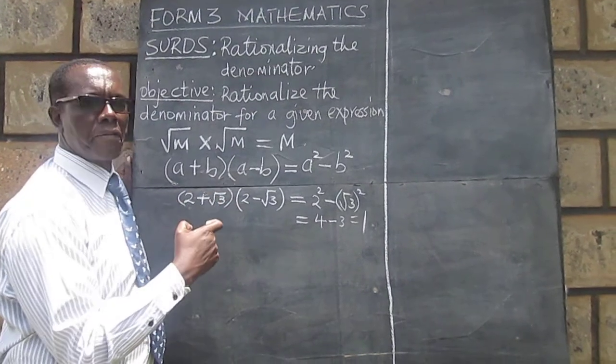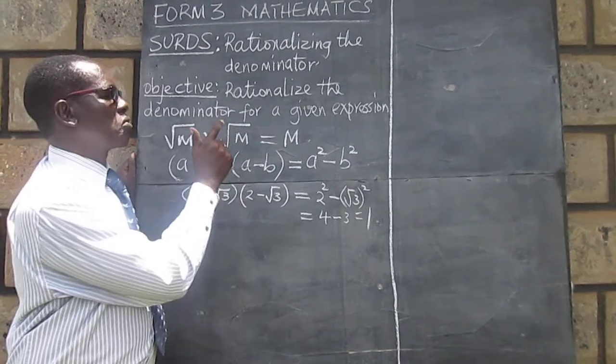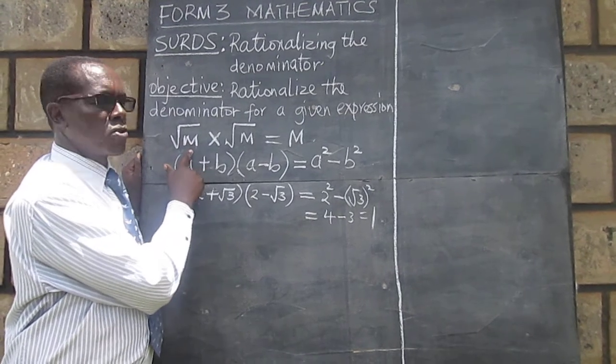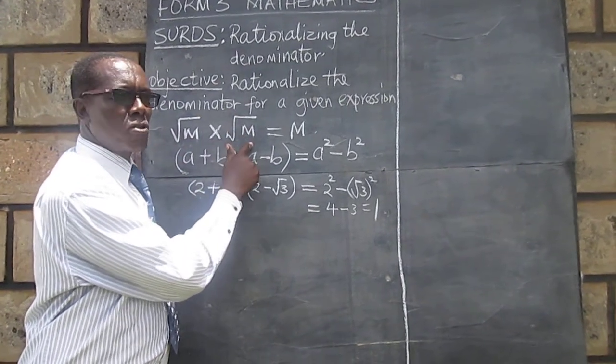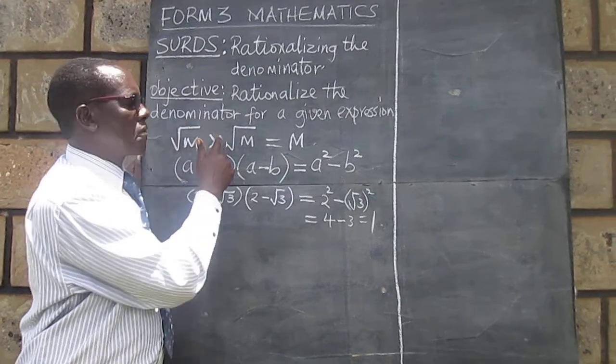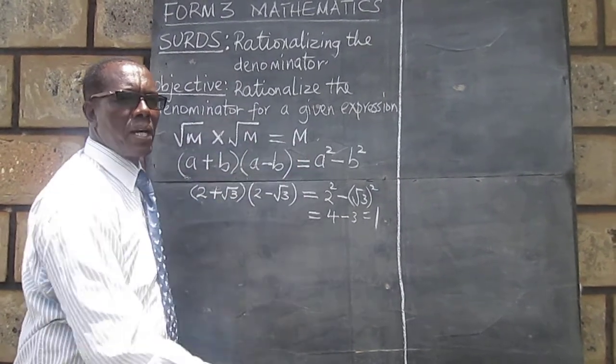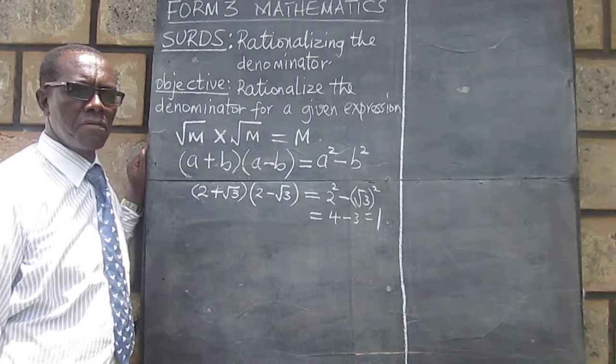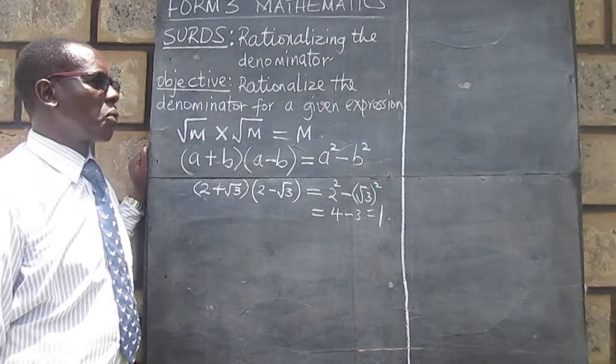When we are simplifying surds we also need to remember from indices that when root of m is multiplied by the root of m, we talked about m power half times m power half becoming m power 1, the root is gotten rid of that way.